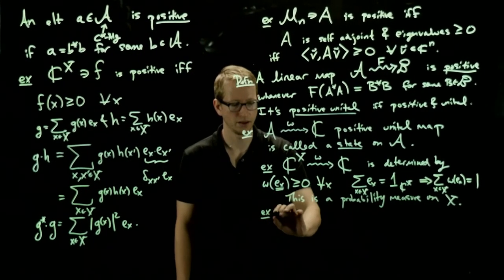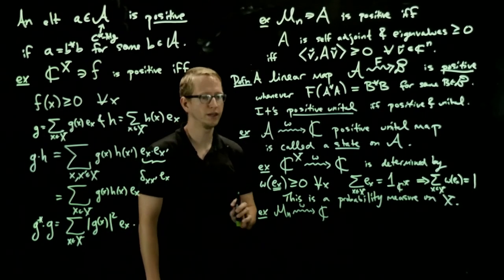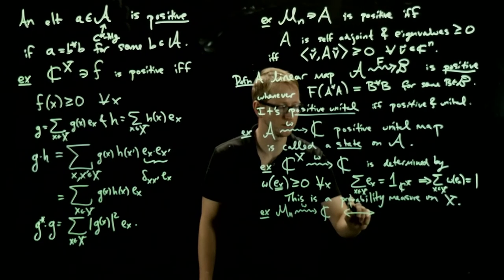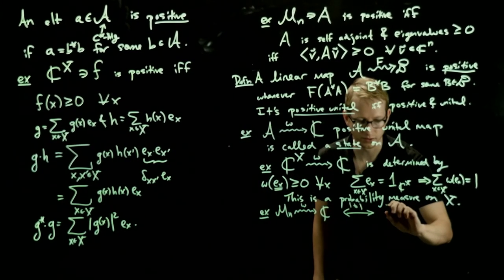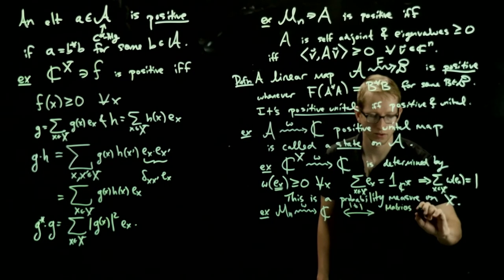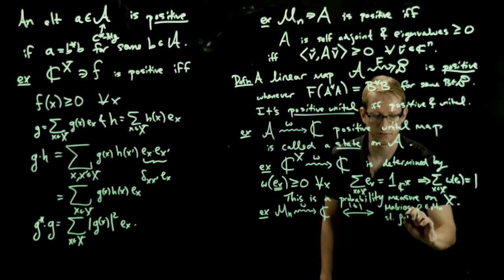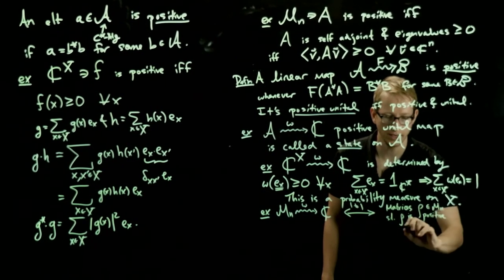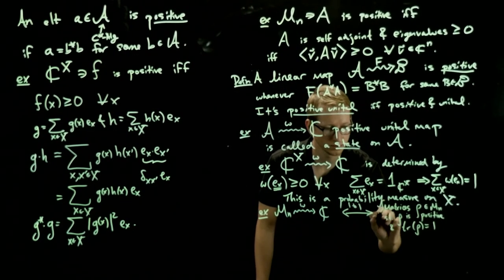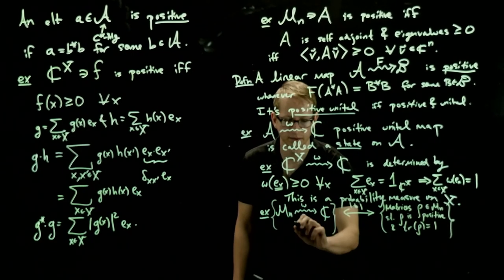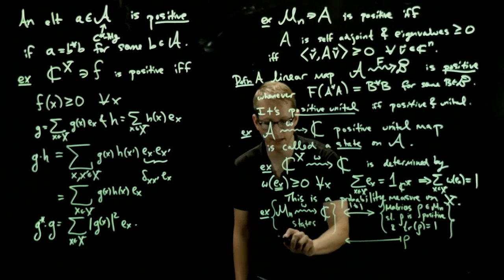As another example, let's look at if we take n by n matrices to C. Then it turns out that there is a one-to-one correspondence between states on n by n matrices and matrices rho such that rho is positive and the trace of rho equals 1. And this one-to-one correspondence takes such a density matrix. Let's put this as the set of all of these guys, the set of all of these states.